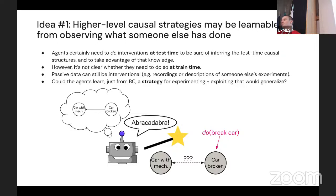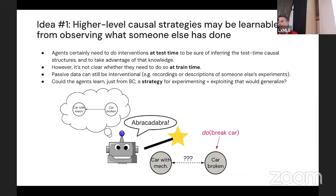Why might causal strategies be learnable even if causal structure itself isn't? Agents need to do interventions at test time to discover causal structure, but it's not clear that systems need to do interventions at training time. Language models might discover some strategy from their training data that they can deploy actively at test time. Crucially, even though the models are observing passive data created by others, that data itself is interventional — it includes people having conversations where each statement is an action, or recordings and descriptions of experiments.